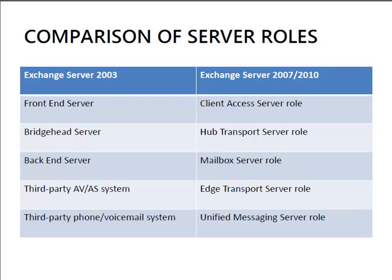In Exchange Server 2003 there was also the concept of a bridgehead server — a server configured on a routing group connector or an SMTP connector, responsible for routing mail in and out of that routing group. In Exchange Server 2007 and 2010 there is now a dedicated server role called the Hub Transport Server role, which is basically responsible for email routing within the organisation and in and out of the organisation as well.